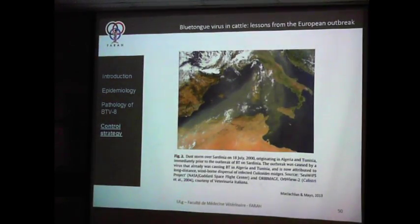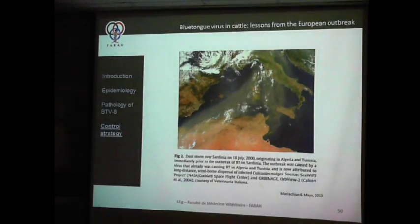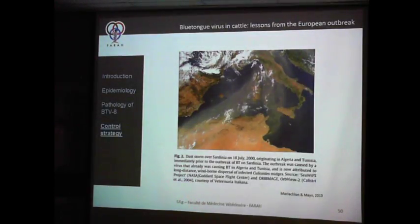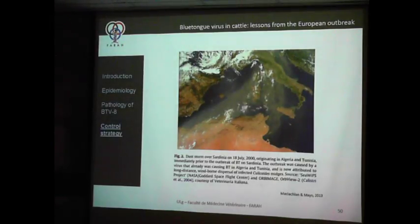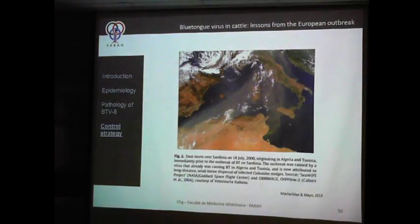This picture shows a sandstorm going from Algeria and Tunisia northward to Sardinia and Italy. Along with this sandstorm you can see sand and enormous numbers of Culicoides carried by the wind, arriving in these countries. These Culicoides can be spread over very large distances by wind, and no control measure can prevent this. After such an event, you have a large outbreak of BTV in these areas — and there is nothing you can do against that.